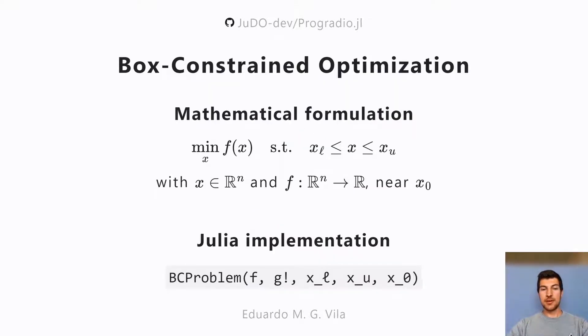The type of problems we are concerned with are box-constrained optimization problems, so we have a function f that we want to minimize with respect to x.